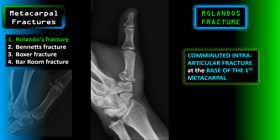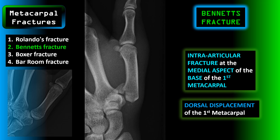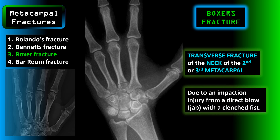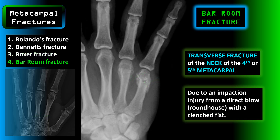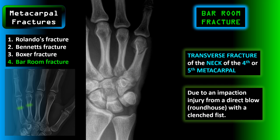When it comes to metacarpal fractures, there are many different ways to break a finger. A Rolando's fracture is a comminuted intra-articular fracture at the base of the first metacarpal. A Bennett's fracture is an intra-articular fracture at the medial aspect of the base of the first metacarpal, and with this you'll often see dorsal displacement of the first metacarpal. A boxer's fracture is a transverse fracture of the neck of the second or third metacarpal, usually due to an impaction injury from a direct blow like a jab with a clenched fist.